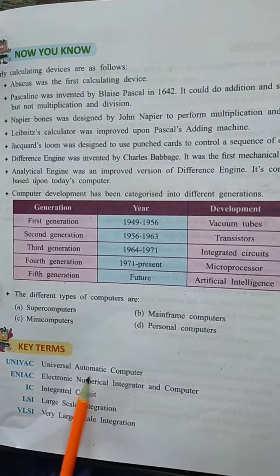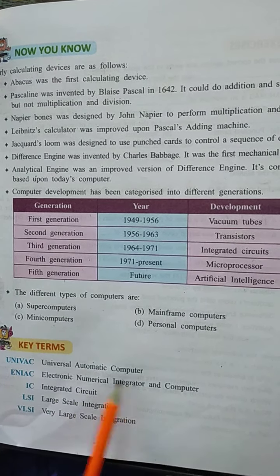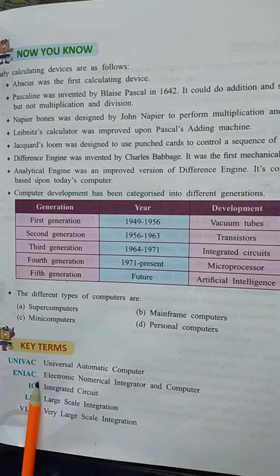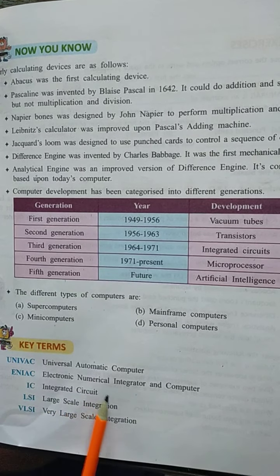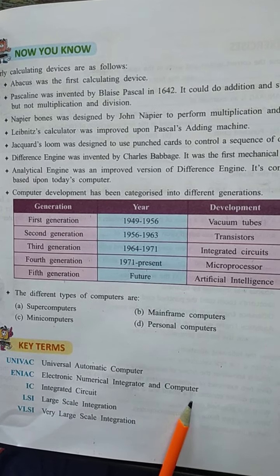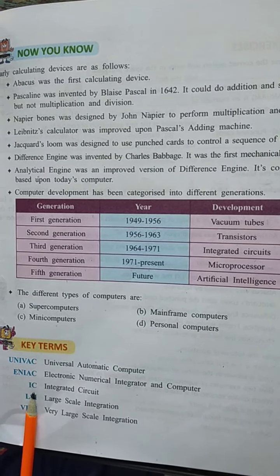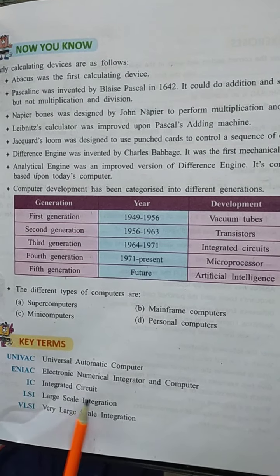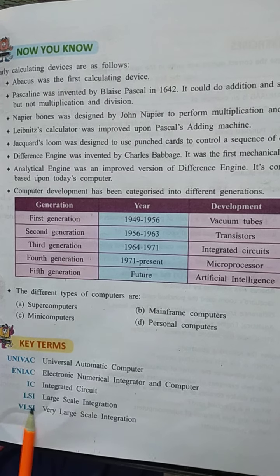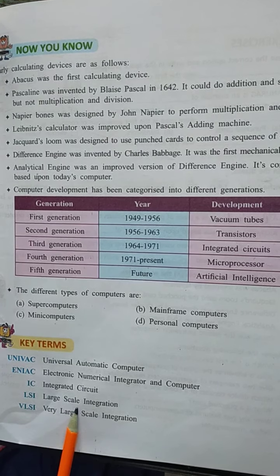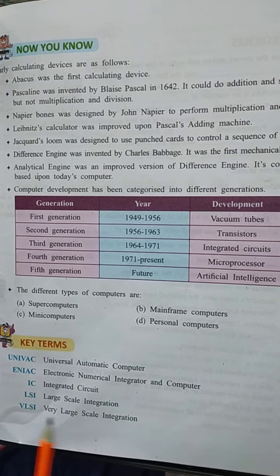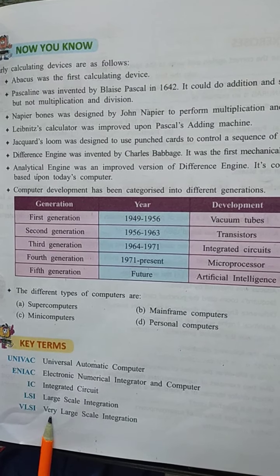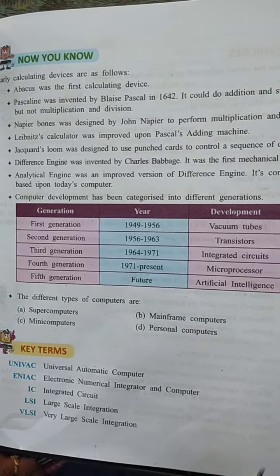UNIVAC means Universal Automatic Computer. ENIAC means Electronic Numerical Integrator and Computer. IC means Integrated Circuit. LSI means Large Scale Integration. VLSI means Very Large Scale Integration.